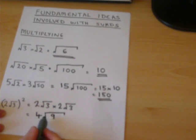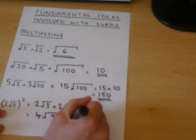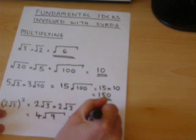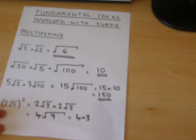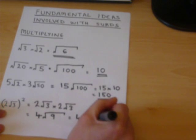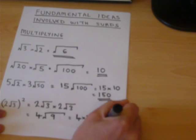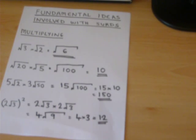We can work out that square root. It is three and four times three equals twelve. So that is how you do the basic ideas of multiplying surds.